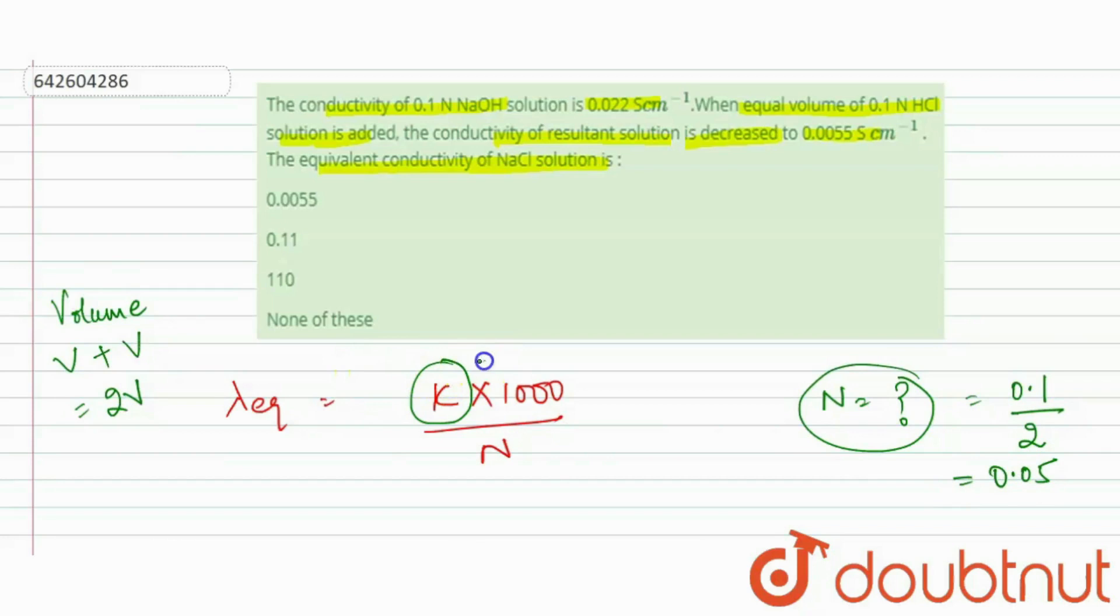Now we have the value of conductivity and normality, so we can calculate the equivalent conductivity. What's the value of conductivity? Value of conductivity is 0.0055. So let's put it here: 0.0055 times 1000 upon 0.05.